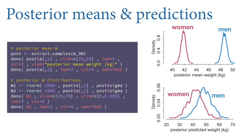To get the actual distributions, we need to simulate observations. W1 is a posterior predicted distribution of adult weights for sex 1 — women — using rnorm with 1,000 simulations, inserting alpha sub 1 as the mean and sigma to give scatter around the mean. Same code for men with alpha sub 2. When you draw the densities, you'll see there's a lot of overlap. In any local population, men are on average heavier than women, but there are lots of women who are heavier than men and lots of men lighter than women — there's a lot of overlap in these distributions.